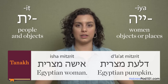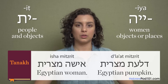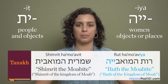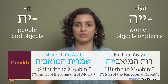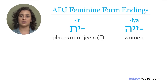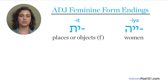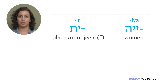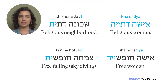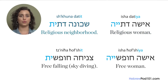We can even find both endings for the same definition: 'Rut ha-moaviyah' — Ruth the Moabite, and 'Shimrit ha-moavit' — Shimrit the Moabite. However, in today's Hebrew there is usually a difference between the two forms. This rule doesn't apply only to nationalities, but to other adjectives as well. For example: 'Isha Datiya' — religious woman, 'Shkuna Datiit' — religious neighborhood.